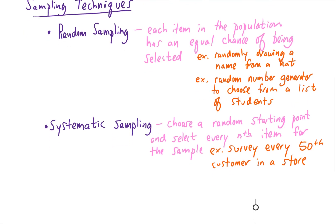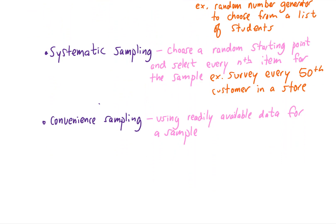The next sampling technique is called convenient sampling and that's just what it sounds like. We're using readily available data to create our sample. For example, I might have a survey that I want to conduct and maybe I just put that survey online somewhere. And whoever sees this and wants to answer the survey can do so. Basically anytime you're using the most convenient method to create a sample, that would be convenient sampling.